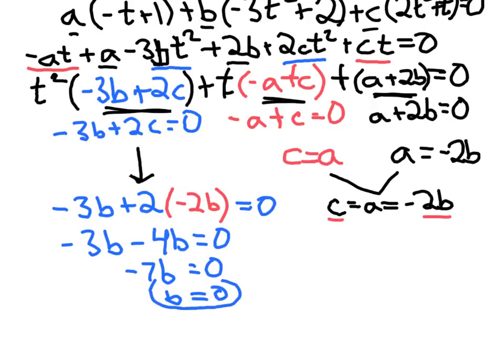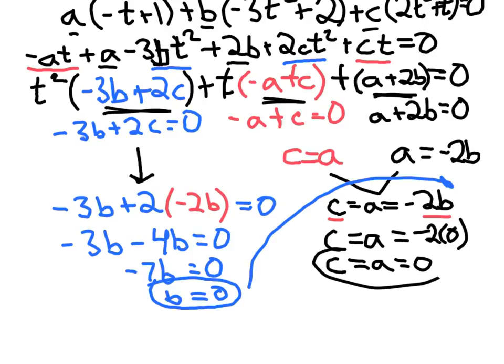So now we know that the scalar b must be 0. If we bring that over here and plug it in, then now we have c equals a equals negative 2 times b, which is 0. So a and c must also be 0. So all of the scalars have to be 0. This means that we only have the trivial solution.